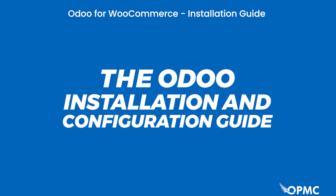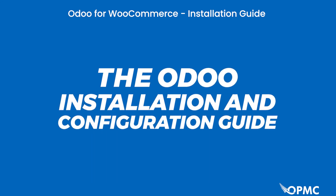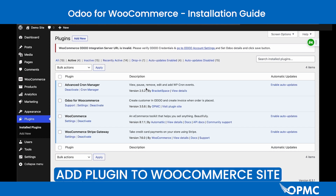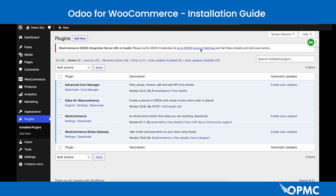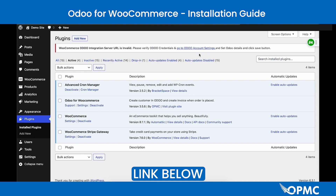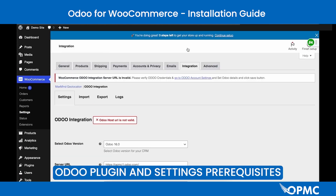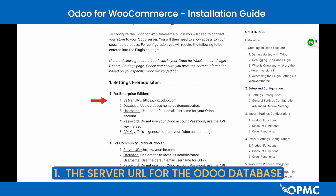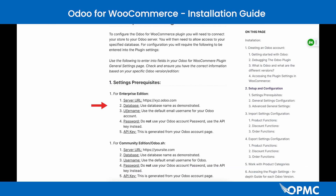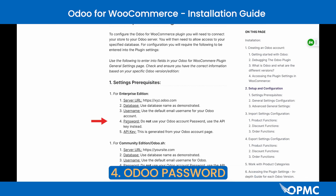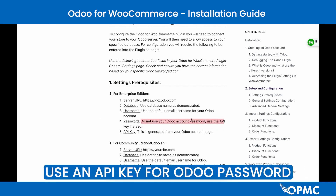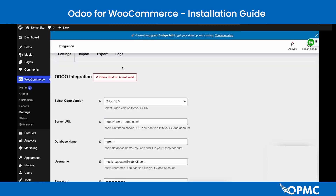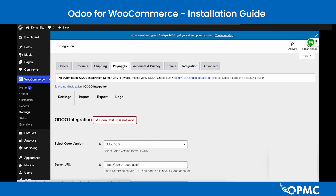This is an installation and configuration guide for the Odoo for WooCommerce plugin. To get started, add the plugin to your WooCommerce site and go to the settings page. You will need the following details: the server URL for your Odoo database, your database name, your Odoo username account, and your Odoo password — which will be an API key generated specifically for the app.